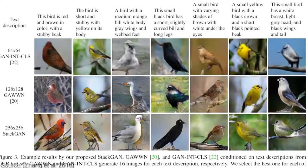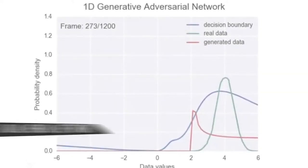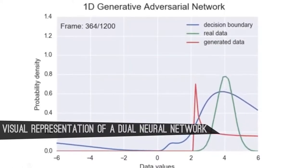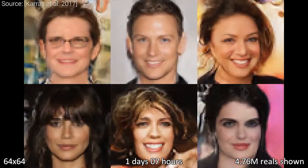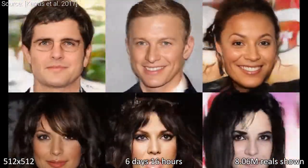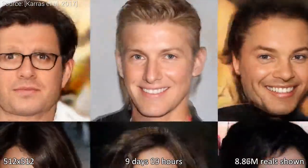What you're looking at are images created just by a written text description. It uses one neural network to generate images, and another neural network within the same system to decide if the images generated are real or fake. High-resolution images of imaginary celebrities are generated via a generative adversarial network — an architecture where two neural networks battle each other.